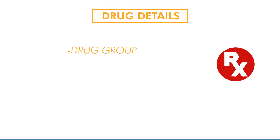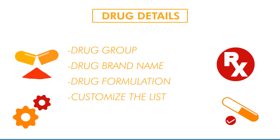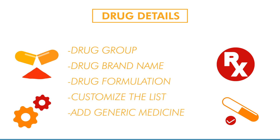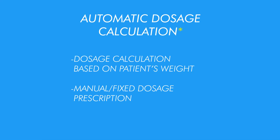AXON provides a default list of drug details, which includes drug group, drug brand name, and drug formulation. You can customize the list as required and also add generic medicines. AXON provides automatic dosage calculation based on patient weight, as well as manual dosage calculation and fixed dosage prescription.